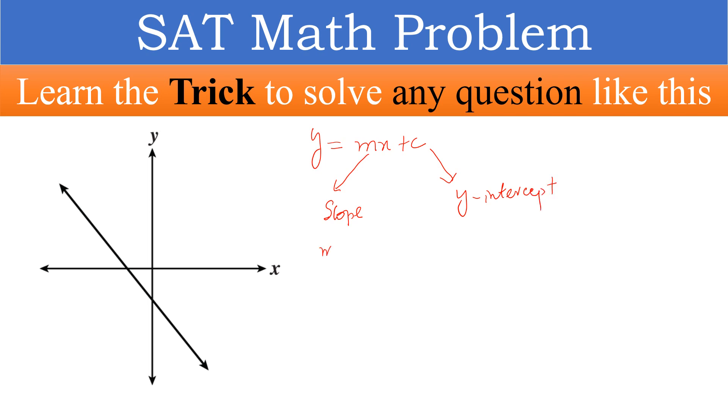If the slope m is greater than 0, it means the function y is increasing. If m is less than 0, it means the function y is decreasing.